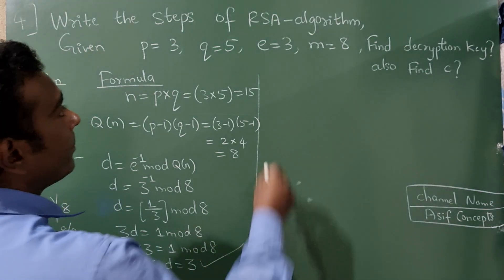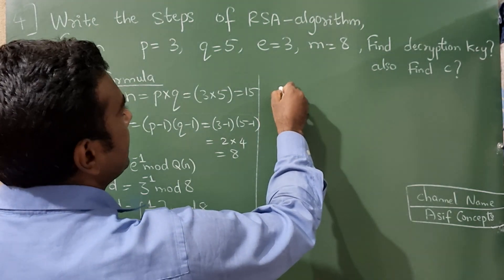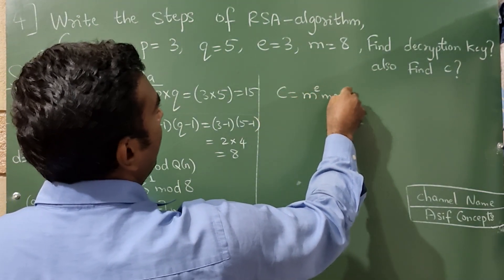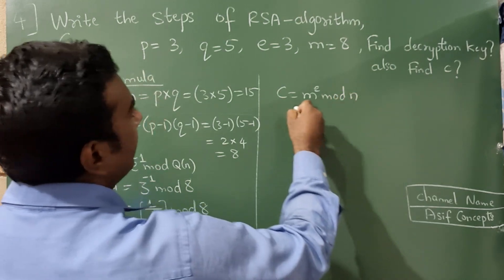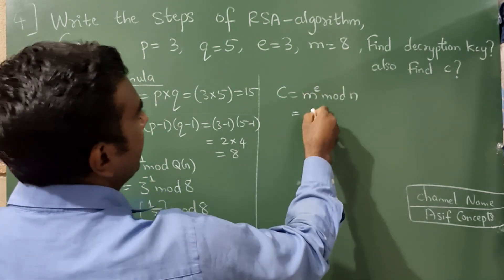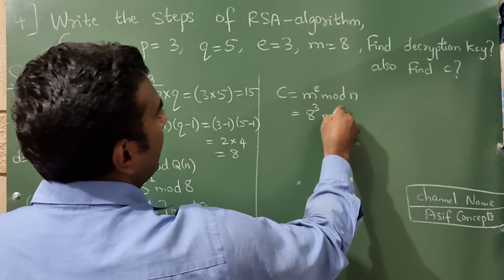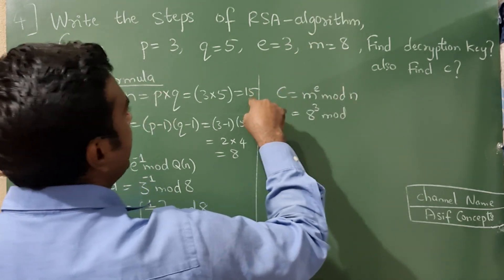Now next, to find C, there is a formula. C is equal to M raise to E mod N. Now what is the M value here? 8. E value is 3 mod N value is 15.